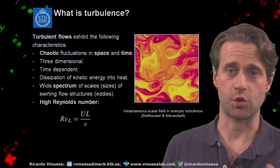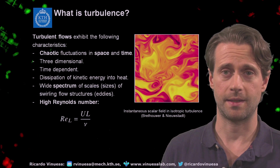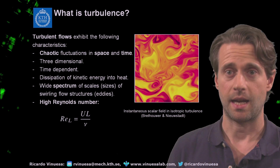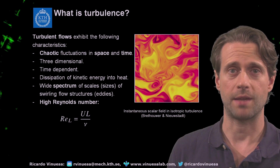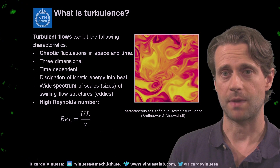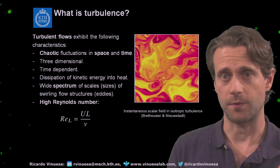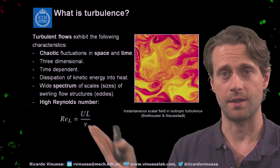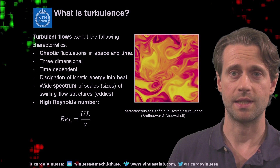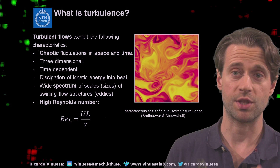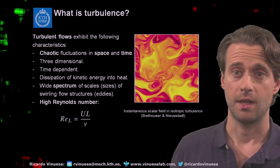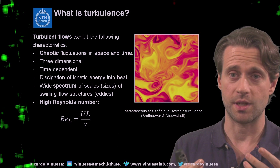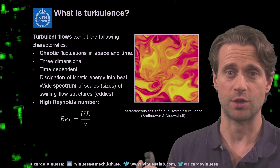The Reynolds number shows that if we have problems that are very large, going at very high speed, and flows that are not very viscous, then this number will get bigger and we will more easily reach the turbulent state. So more turbulent states are associated with higher Reynolds numbers.